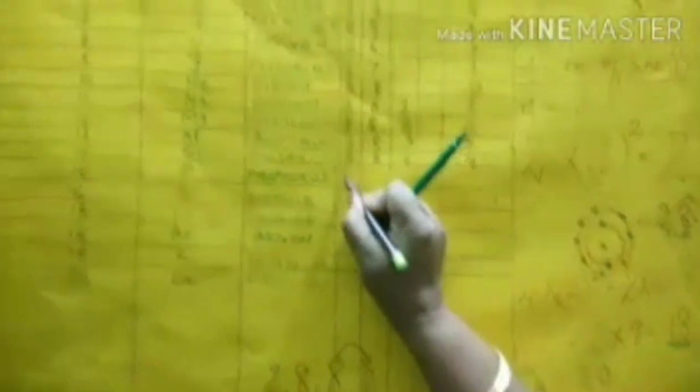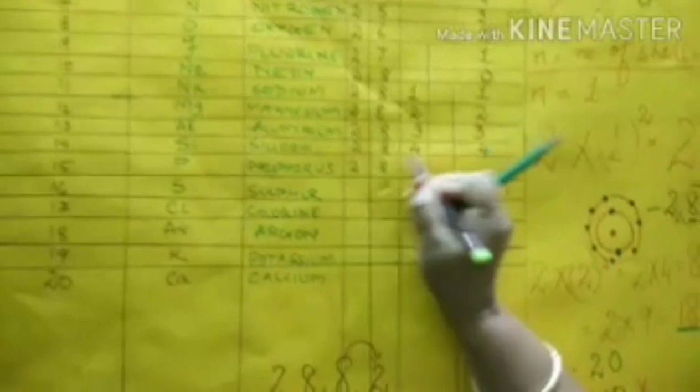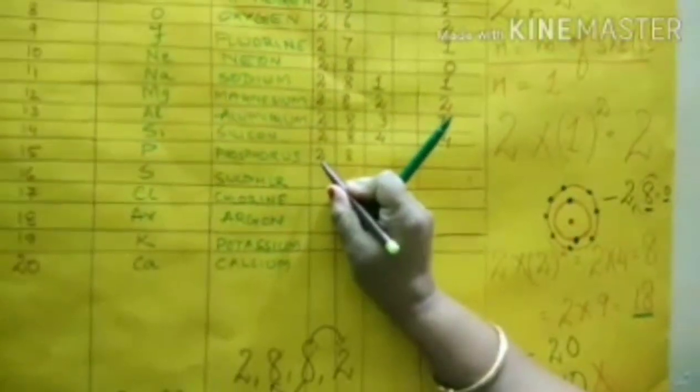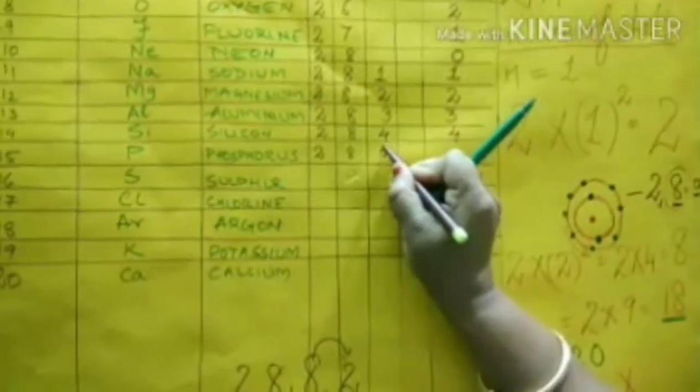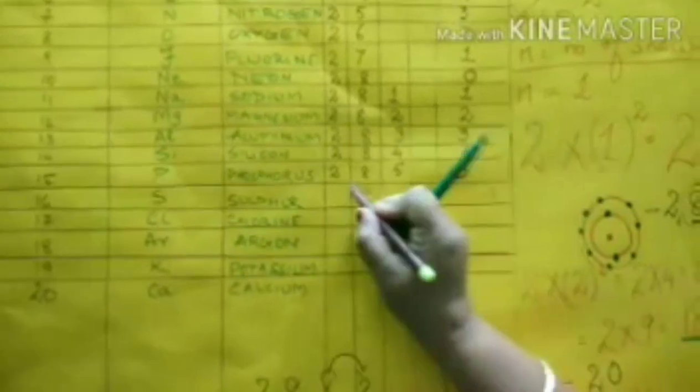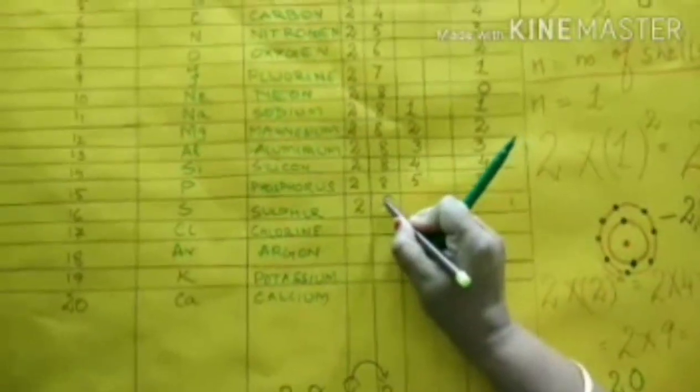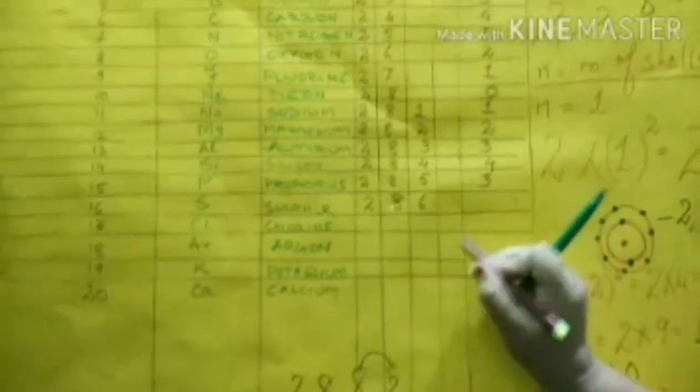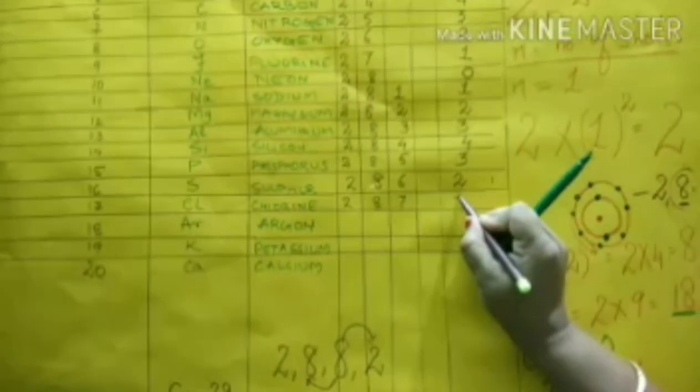Phosphorus, 2, 8, then 8 plus 2, 10, 5. More than 4. What you have to do? Subtract it from 8. Then it becomes 3. Sulfur, 2, 8, 6. Subtract it from 8, 8 minus 6, that is 2. Chlorine, 17, 2, 8, 7, 8 minus 7, its valency is 1.